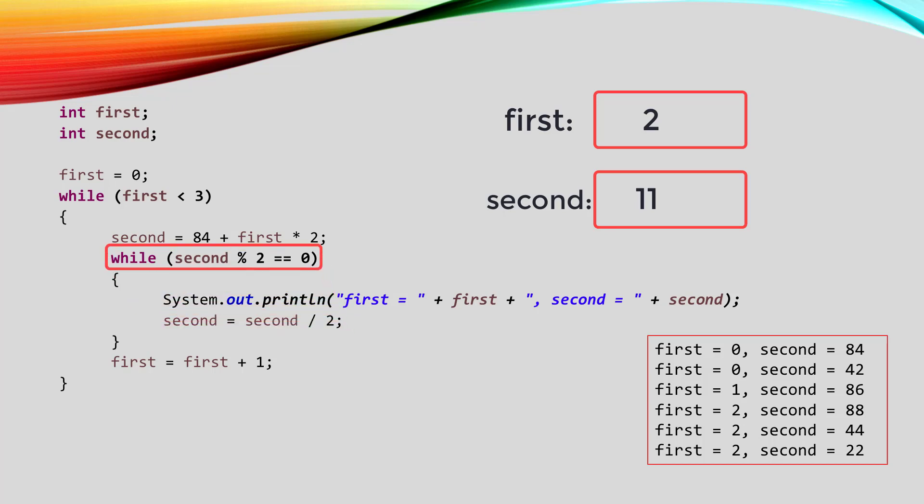Now second is odd, so the inner loop stops. Now first gets incremented and becomes 3. When we go back up to the top of the outer loop, its condition is false, and all of this code ends.